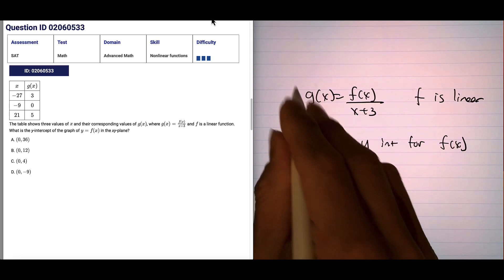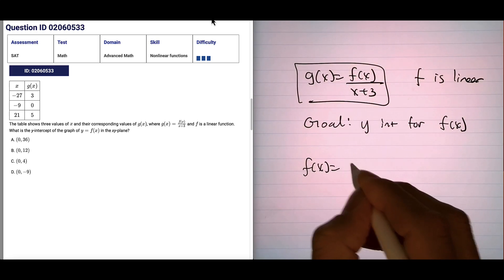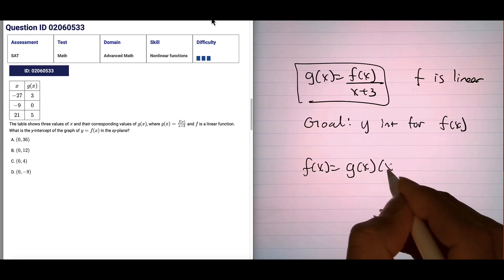We need to use this equation. So if you rearrange it, f of x can be written as g of x times x plus 3.